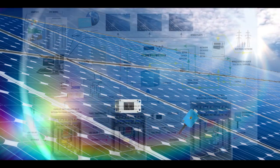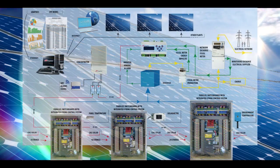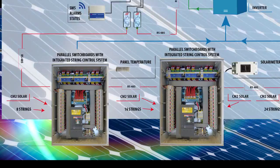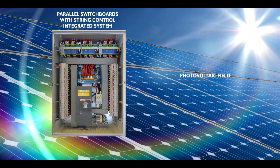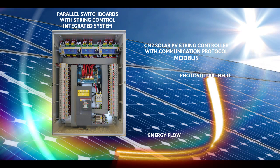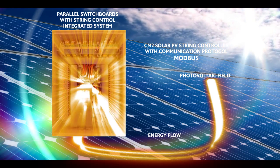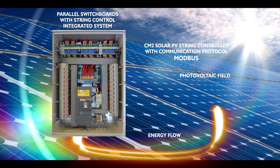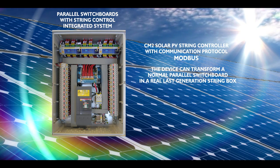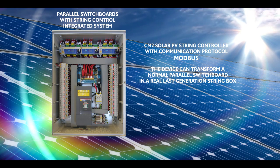A simple flow chart allows an easy understanding about the energy produced by a photovoltaic field divided by strings when this energy passes through parallel switchboards. This system integrated by the CM2 solar control devices becomes a complete system, very efficient in acquiring all the information that are important for a correct management of the performance in the photovoltaic plant.